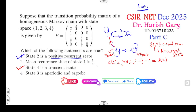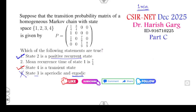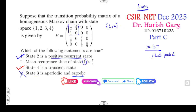States 1 and 2 are positive recurrent states — that is the correct option. State 3 is a transient state, so it can never be ergodic, meaning the 4th option is cancelled. Now, the mean recurrence time requires us to find the stationary probability of state 1. The relevant 2×2 submatrix for states {1, 2} has entries: (1/4, 3/4) in row 1 and (1, 0) in row 2.